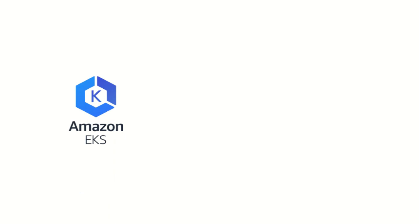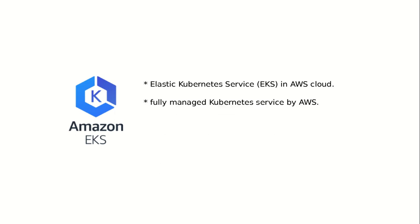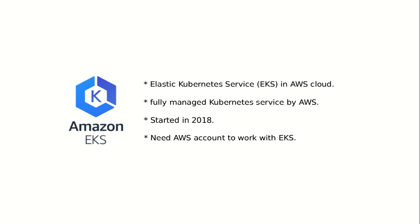The next tool we have is Amazon EKS, which stands for Elastic Kubernetes Service, also in your AWS cloud. This is a fully managed Kubernetes service provided by AWS, started in the year 2018. To work with EKS, you will need an AWS account. Both ECS and EKS are fully managed services, meaning everything is readily available so you can start working with containerization technology within your AWS cloud infrastructure.